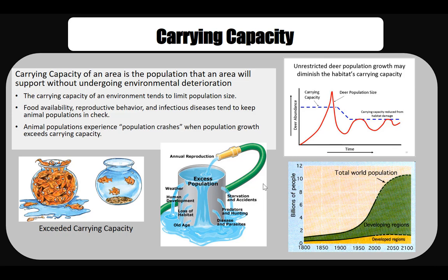For populations which grow exponentially, growth starts out slowly, then enters a rapid growth phase, and then levels off when the carrying capacity for the species has been reached. The size of the population fluctuates slightly above or below the carrying capacity.